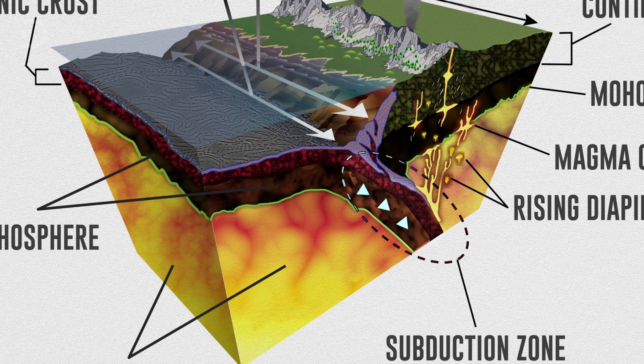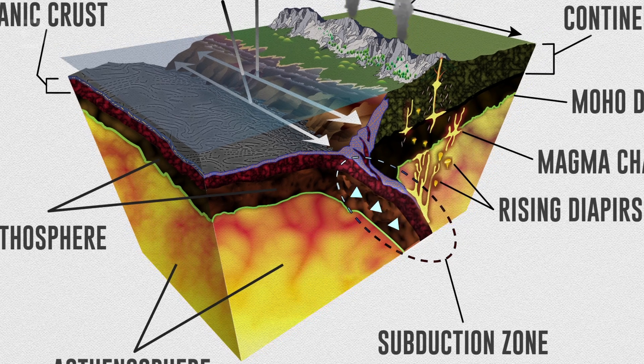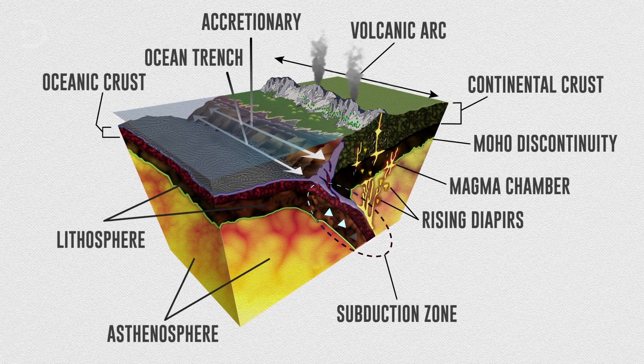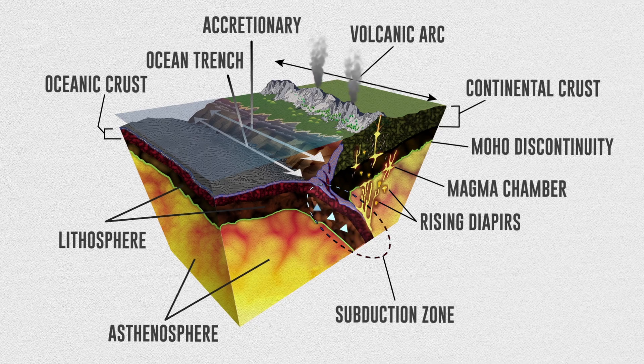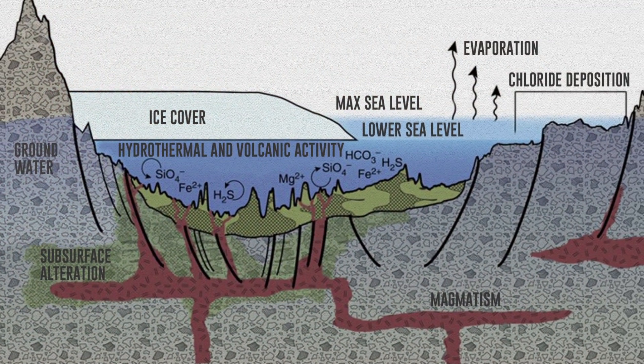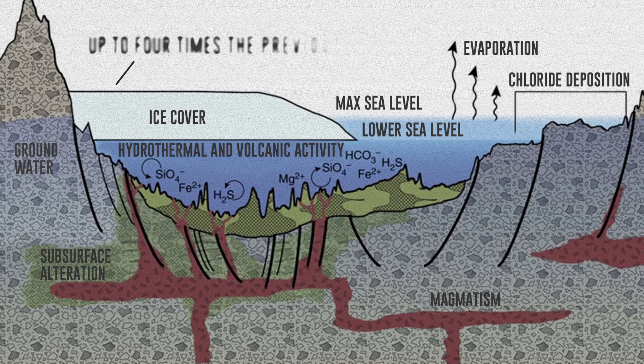At certain temperatures and pressures, chemical reactions create what is known as wet rocks, which is a hydrous mineral that forms part of the tectonic plate. And that gets pushed deeper and deeper into the hot mantle. Researchers also found that the amount of water held in rocks was far higher, up to four times the previous estimates.